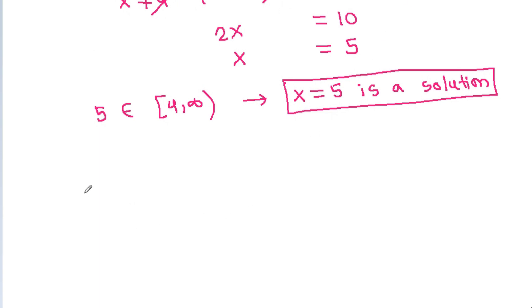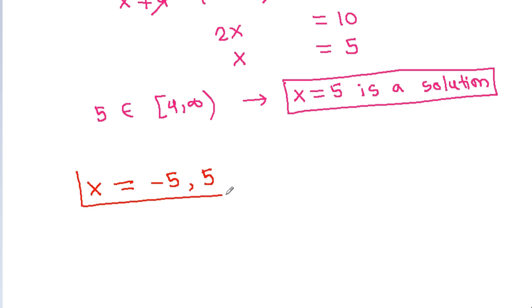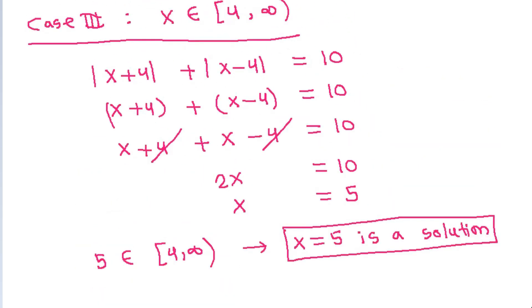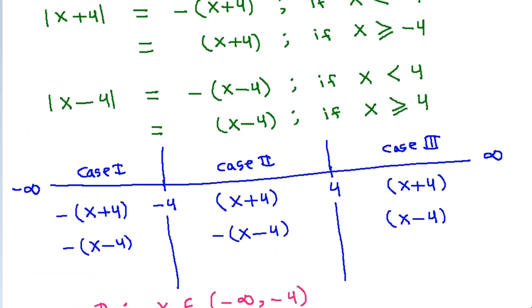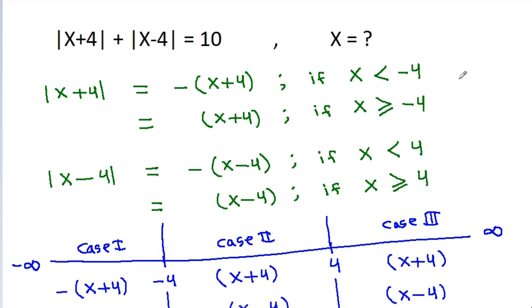So we get x = -5 from case 1, and x = 5 from case 3. Therefore, x = -5 and x = 5.